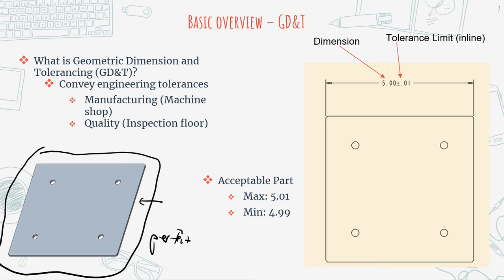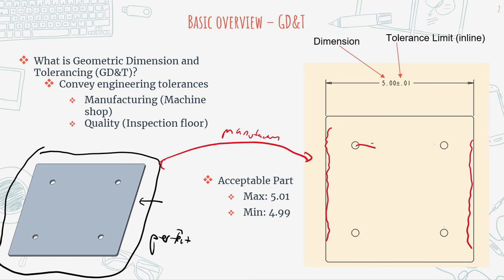But when you bring that part over for manufacturing, you'll notice that there are going to be imperfections due to the machining process, and the features are slightly different than what you dimensioned them to be. And this is why we need GD&T.